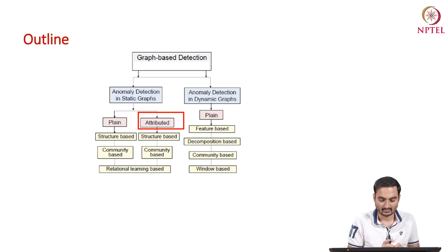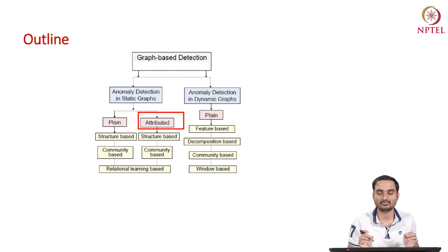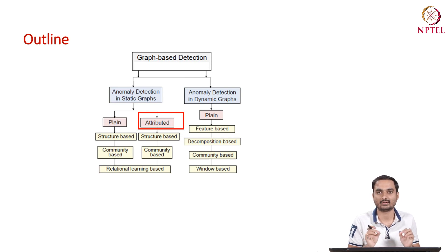In the next lecture, we will look at attributed graphs and discuss one algorithm in detail, which takes into account community information as well as the attributes of nodes and edges to identify outliers or anomalous entities in a network.